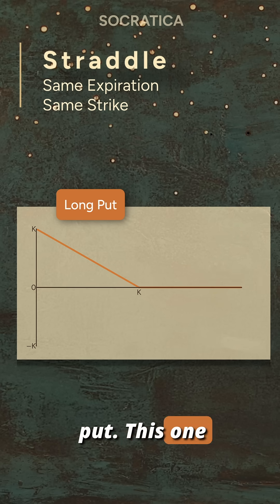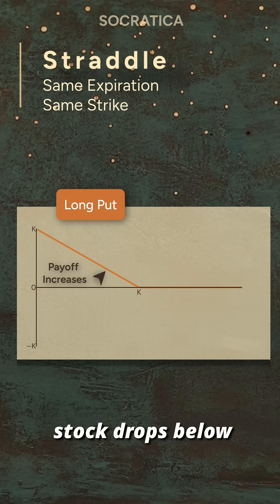Now the long put. This one profits if the stock drops below the strike. If it rises, the most you lose is the premium.